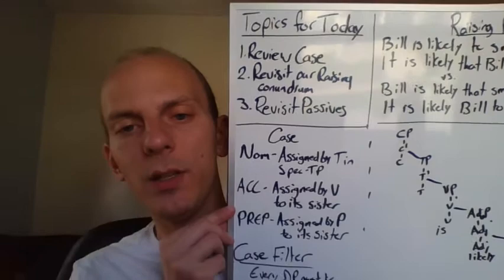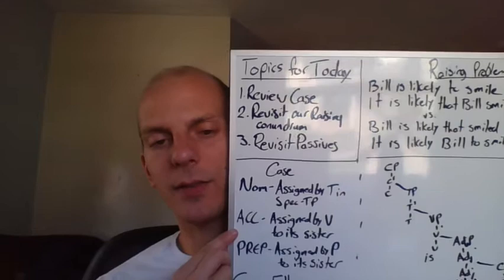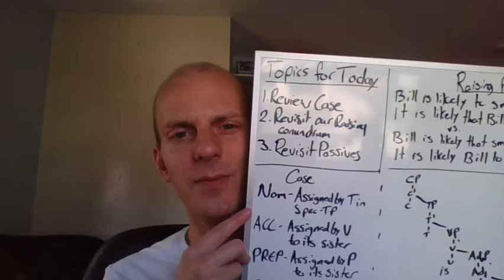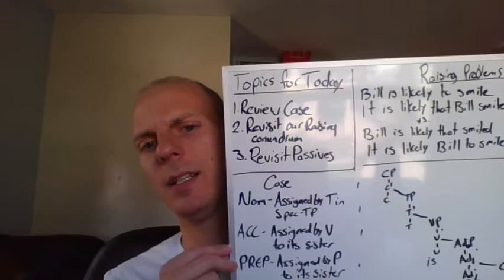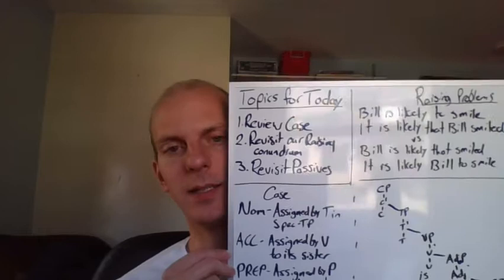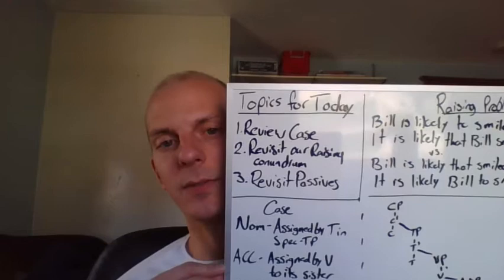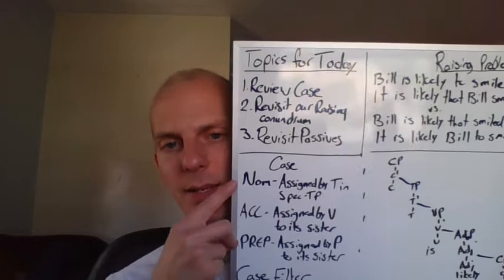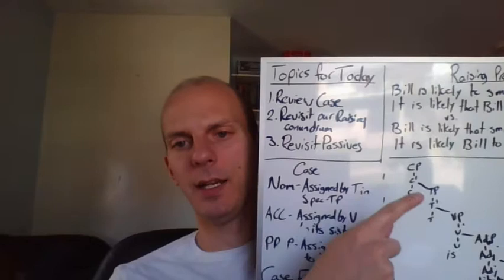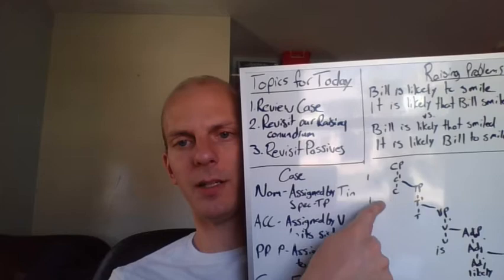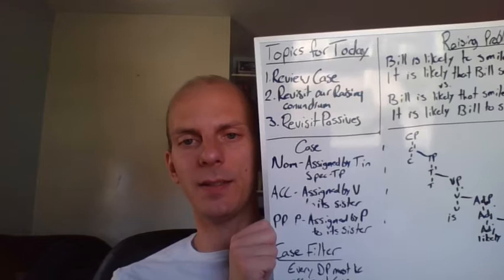So, case. We looked at case in English, and again this is an English grammar and English syntax class, so that's what we're going to be focusing on. But I do want to point out that different languages do case very differently. Most languages have cases, but how they're assigned, how many they have, whether they're on the verbs, whether they're on the nouns — all that kind of stuff can change. We'll be taking a look at some different systems probably this Friday in our discussion section. For English, we saw three cases. We saw nominative case, which is assigned by T, and it's assigned in the spec TP position.